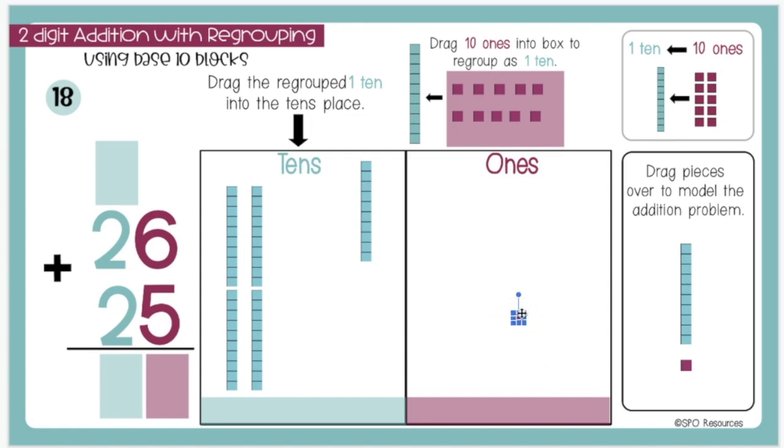Now I am left with 1 1 in my 1s place, so I will type 1 1. And I have 5 total 10s in my 10s place, so I will type 5 10s.